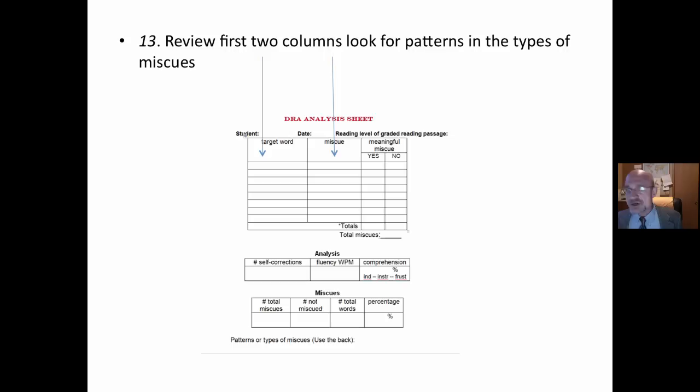Keep it simple. Then I go back and I look at the first two columns looking for patterns or types of miscues. If there's a certain type of letter pattern or word that gives the student problems. Or if it's beginning, middle, and end. That's part one of miscue analysis. I'll be looking at a qualitative analysis in just a minute.